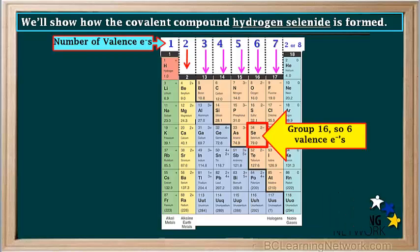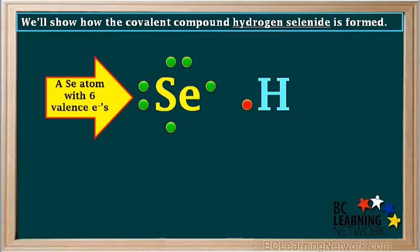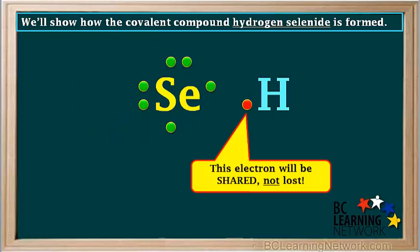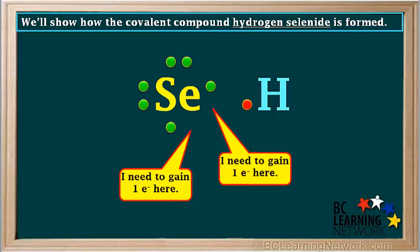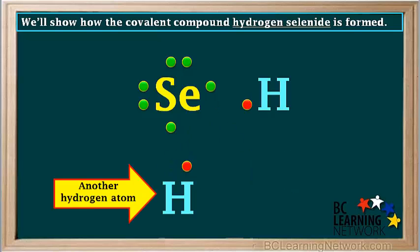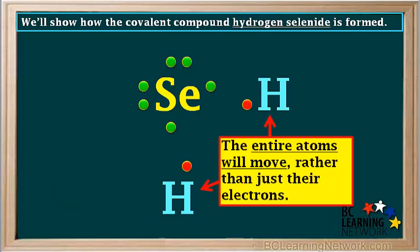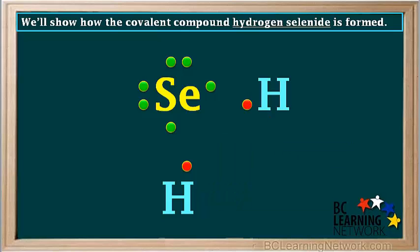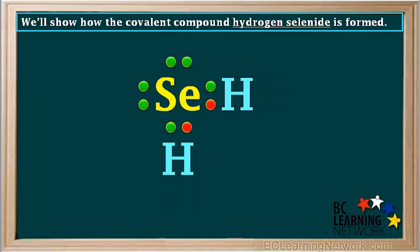The other element selenium is in group 16, so it has six valence electrons. We'll show a selenium atom with six valence electrons here. Because the compound formed from hydrogen and selenium is covalent, the valence electron on this hydrogen atom will be shared rather than lost. A selenium atom must acquire two electrons to form a stable octet. In order to get two electrons, it will need to react with two hydrogen atoms. So we'll show another hydrogen atom down here with its one valence electron. When a covalent compound forms, entire atoms move, not just their electrons. So the two hydrogen atoms will move toward the selenium atom, bringing their valence electrons with them, like this.